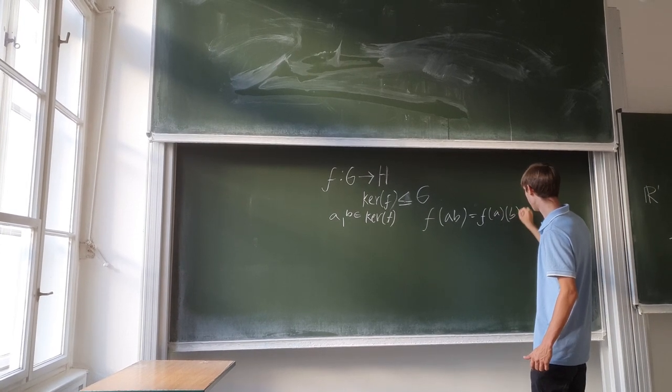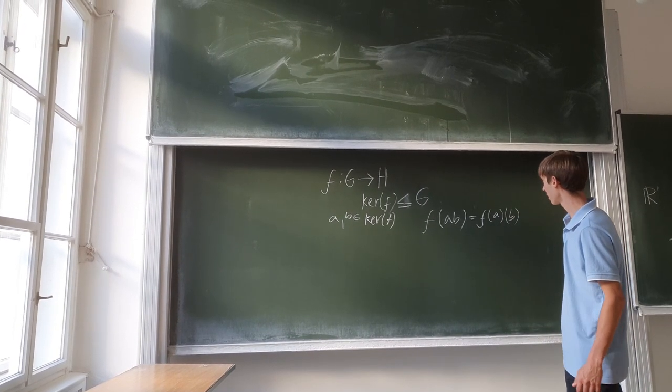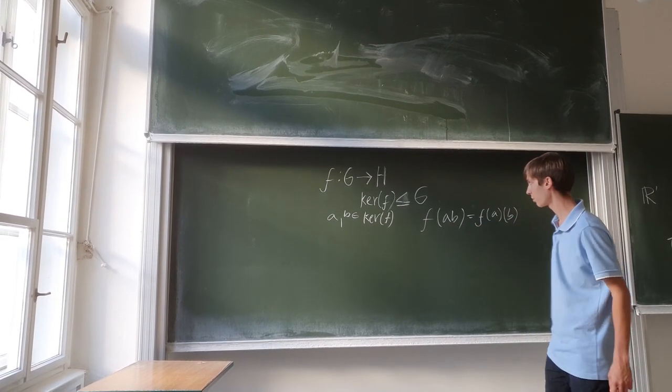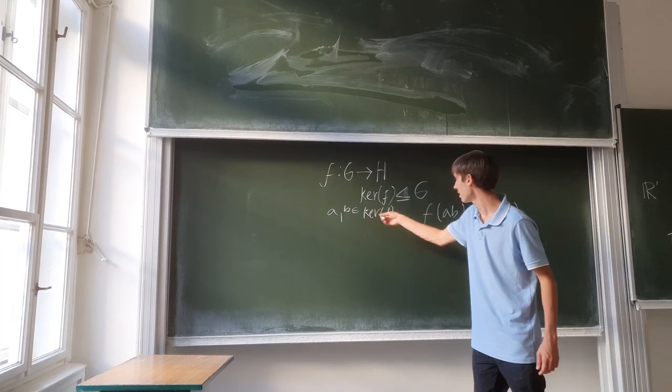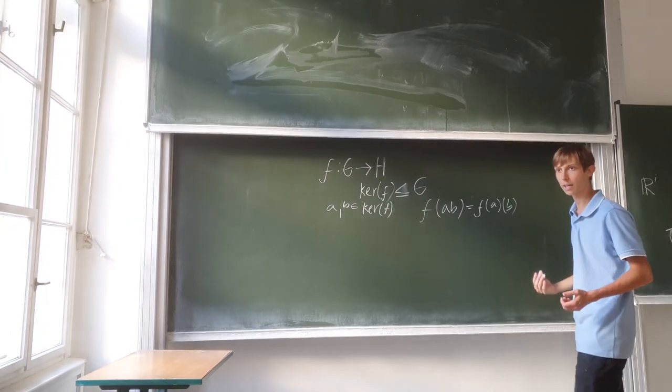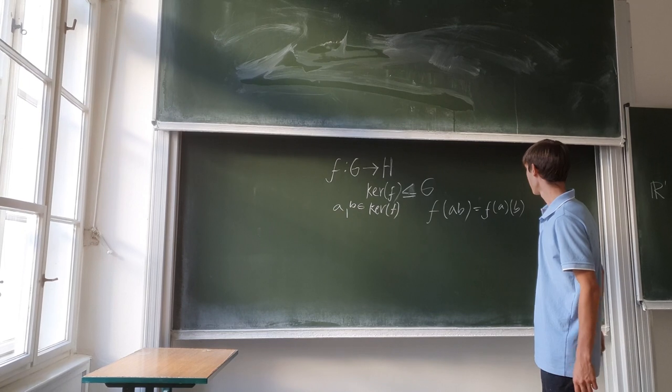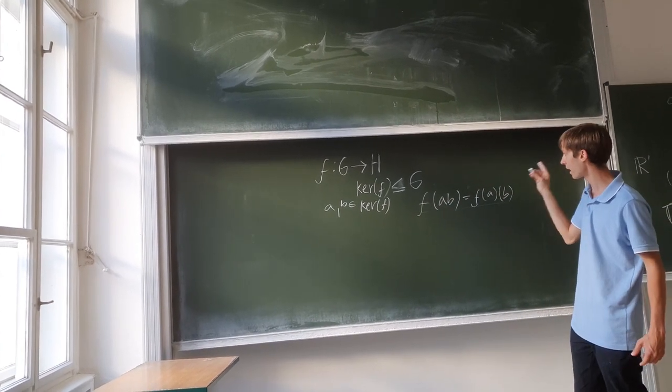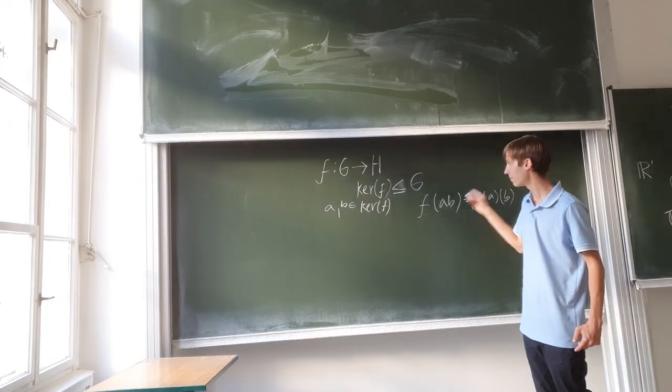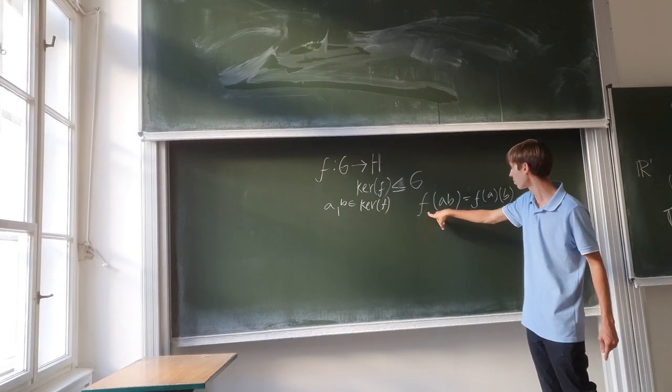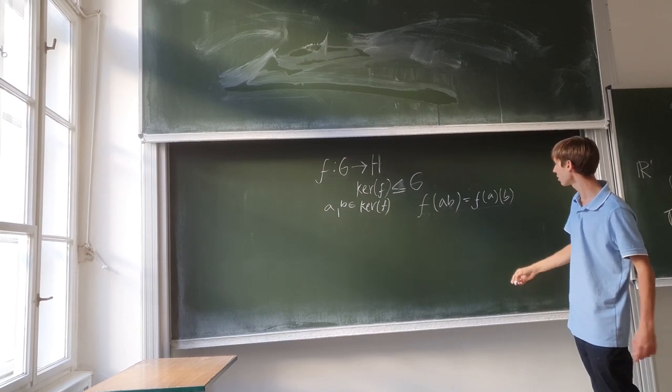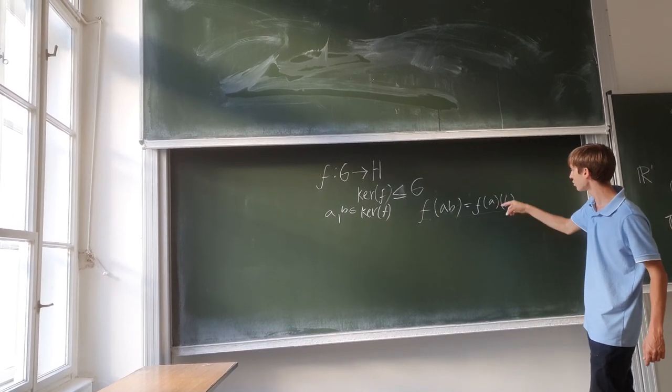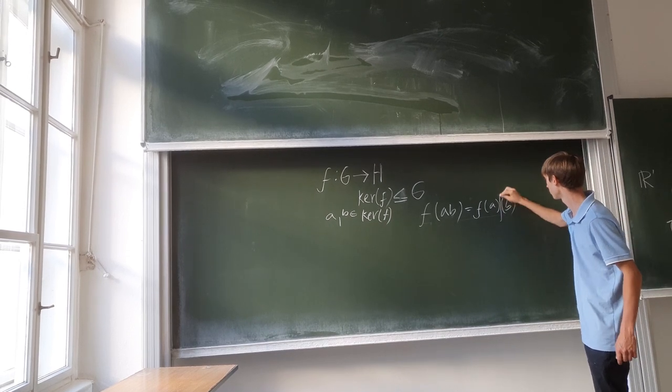For a homomorphism to work, if these are from G - given that a, b are in kernel f and we want to prove that kernel f is a subgroup of G - the general equation of homomorphism means that we put this function on top of ab in G's operation, which equals f(a) in H's operation with f(b).